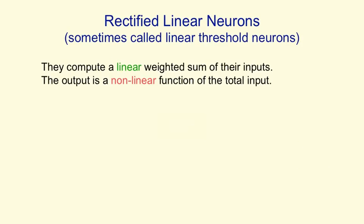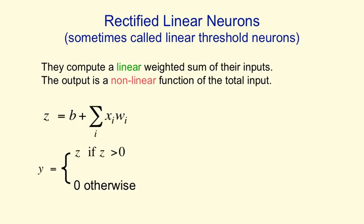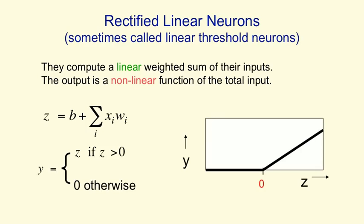A kind of neuron that combines the properties of both linear neurons and binary threshold neurons is a rectified linear neuron. It first computes a linear weighted sum of its inputs, but then it gives an output that's a non-linear function of this weighted sum. So we compute z in the same way as before. If z is below 0, we give an output of 0. Otherwise, we give an output that's equal to z. So above 0, it's linear, and at 0, it makes a hard decision. So the input-output curve looks like this. It's definitely not linear, but above 0, it is linear. So with a neuron like this, we can get a lot of the nice properties of linear systems when it's above 0. We can also get the ability to make decisions at 0.